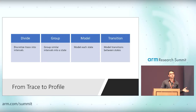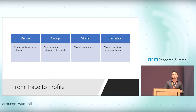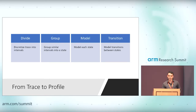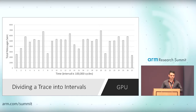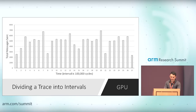Let's talk about how we go from a trace to a profile. First, we divide the trace into a series of intervals. Then we group intervals that are similar to each other, signifying they belong to a phase or state. Then we model each state, and then model the transitions between states within the trace. Here's a look at a GPU workload: on the x-axis, we have time represented as intervals of 100,000 cycles each; on the y-axis, the total number of messages being sent. We can see some time-varying behavior, which is really interesting.